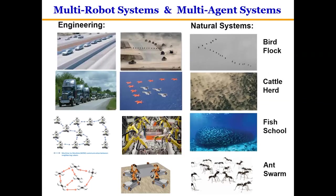Supported by recent advances in high-performance hardware and computational technologies, man-made multi-robot systems have been developed rapidly, presenting tremendous potentials and opportunities. Examples of such developments include autonomous ground and aerial vehicles, mobile manipulators, robotic arms, and mobile robots.